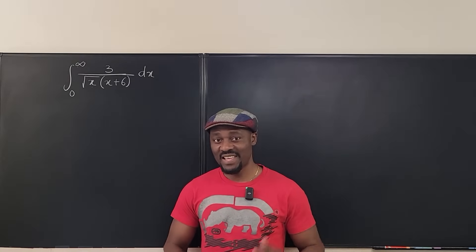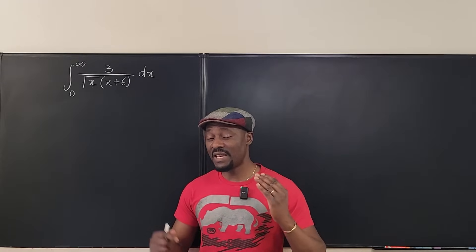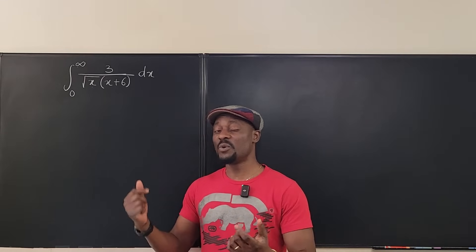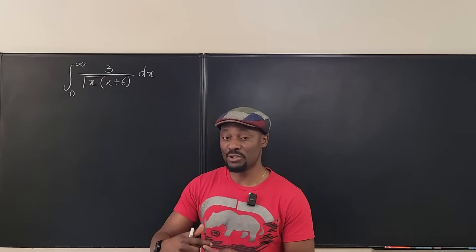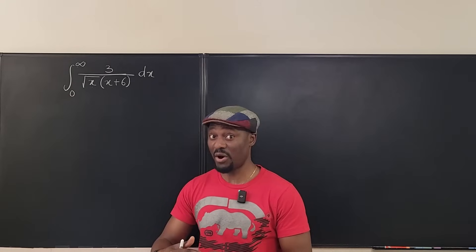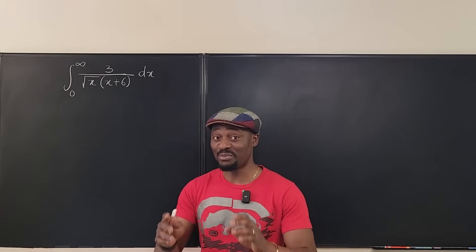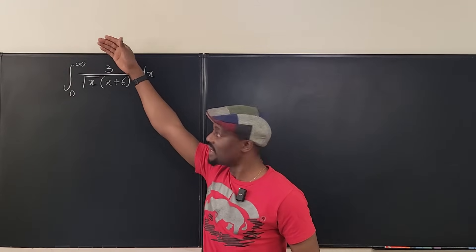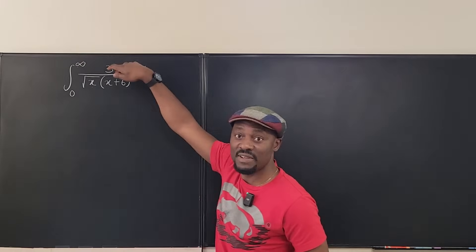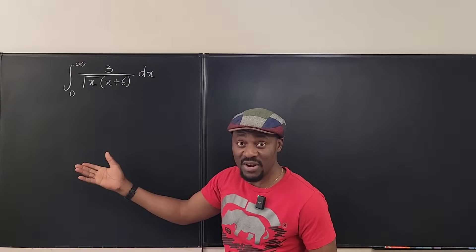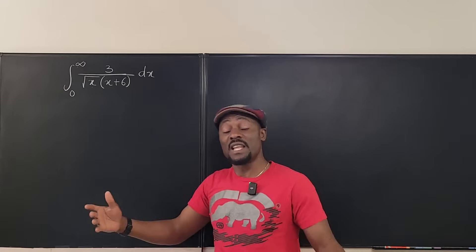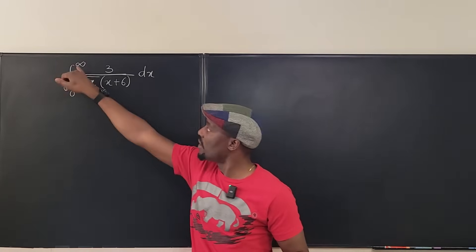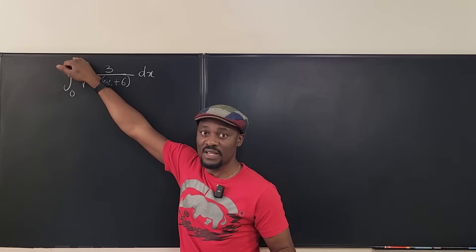Welcome to another video. I have an improper integral here that contains both type 1 and type 2 of the problem. The most obvious issue is that you cannot plug in infinity after you're done integrating. So we say it's an improper integral because one of the bounds is infinite.